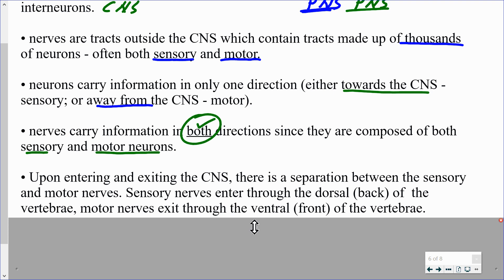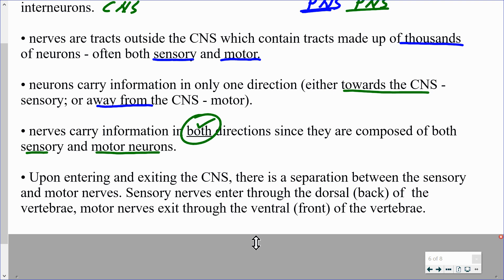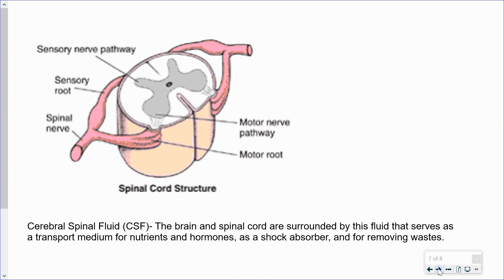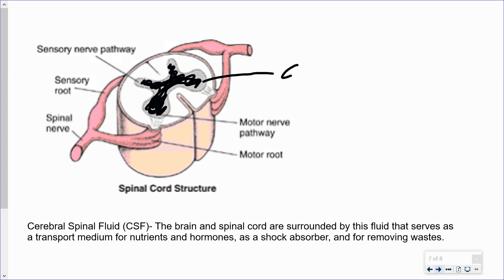These nerves, carrying information to and from the central nervous system, typically enter through the spinal cord. Let's look at this cross-section through the spinal cord. In the center, there is a butterfly shape made up of the cell bodies of interneurons. These neurons don't have any myelin, and because myelin is white in color, the absence of it means this region is actually gray — referred to as the gray matter.